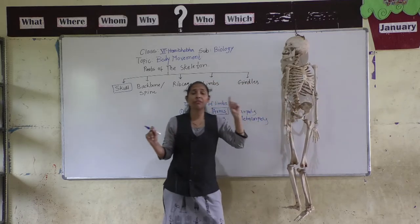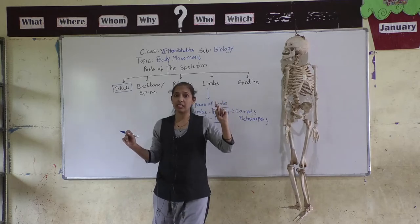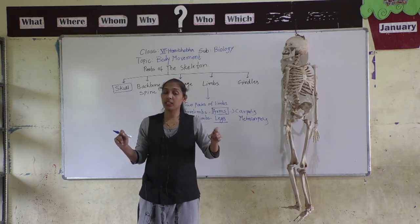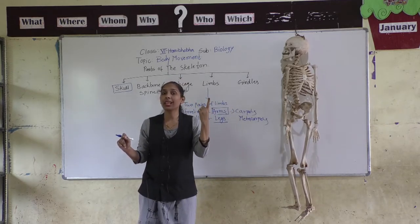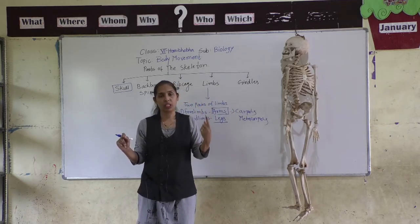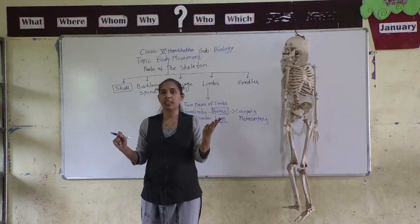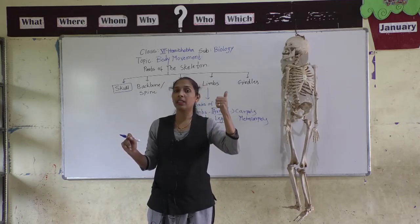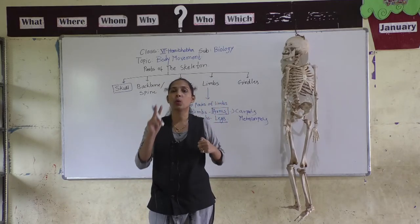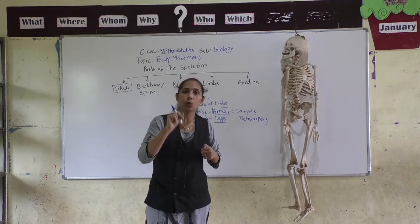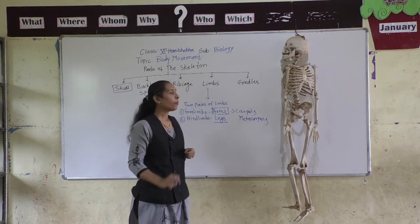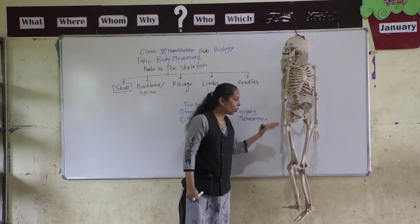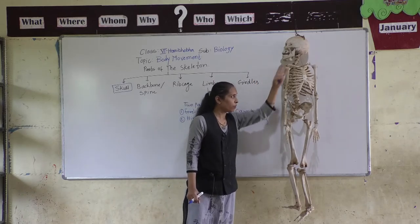Each finger has three bones, while the thumb has only two bones. This is the complete structure of the forelimbs.